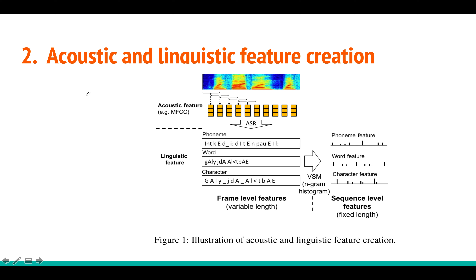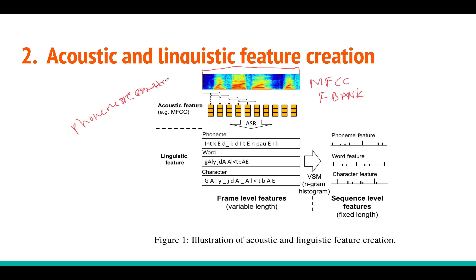Before that, let's look at how to extract acoustic and linguistic features. Acoustic features are straightforward — audio can be represented using spectrogram, MFCC, or mel filterbank energy feature vectors. To get phonetic, word, or character features you need transcripts. Since transcripts may not be available, you can train a phoneme recognizer or a word-based automatic speech recognition system to generate them.